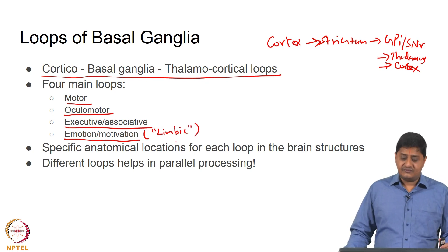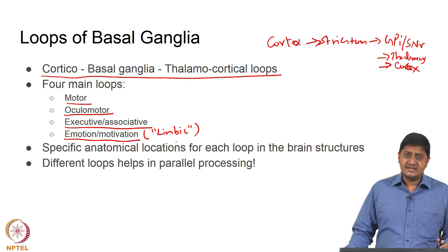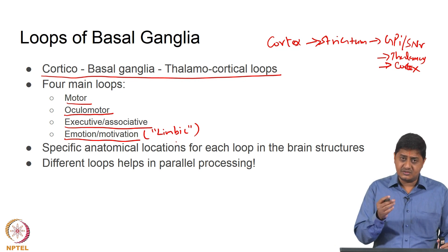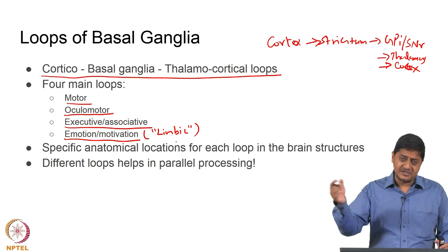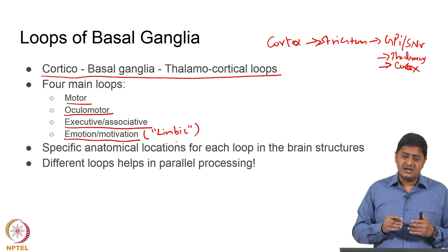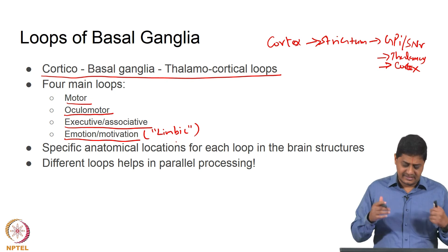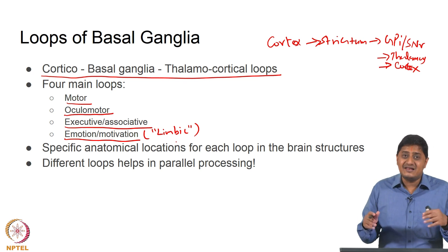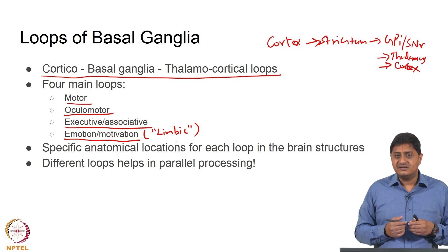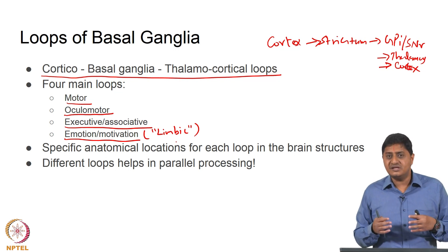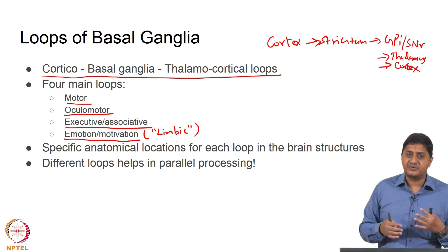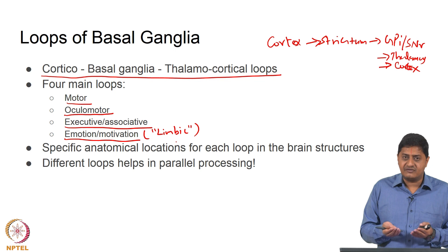Each of these loops has a dedicated specified area within the basal ganglia. Their inputs are kept separated, their processing loops are kept separate, and their outputs are also kept separate. Essentially what you have is an architecture that is parallel in nature, meaning different aspects of behavior are processed in parallel by the basal ganglia. Behavior is this combination of motor, emotional, associative, executive, perception, and a whole number of different functions.